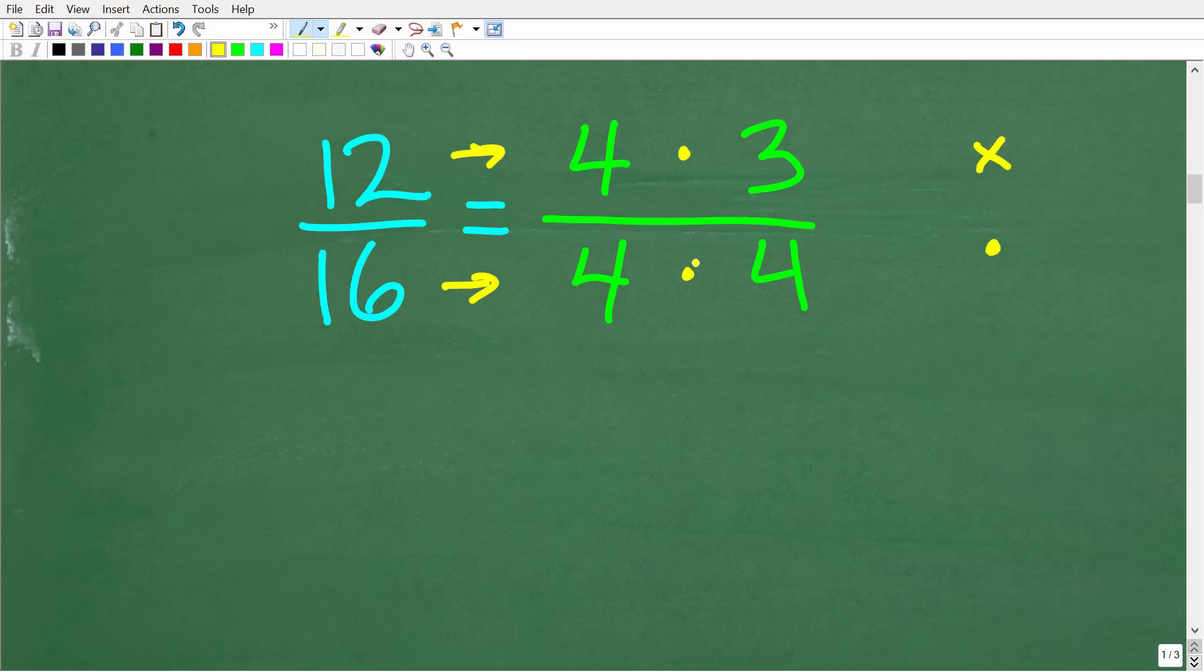All right so when you are simplifying a fraction you want to be on the lookout for like factors. In other words the same number in the numerator and the denominator when you have these numbers factored. So you can see here we have a 4 in the numerator. We also have a 4 down in the denominator. Now we also have another 4 but you can only cross cancel one factor one number per one number. So unless I had another 4 up in the numerator I can't cross cancel this 4. But if you have like factors you can cross cancel and what's left over is the answer.